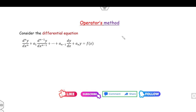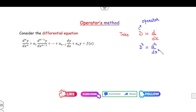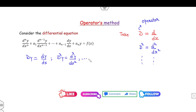Consider the nth order differential equation. We define the operator D as d over dx — make sure this capital D is the operator. Then D squared is d squared over dx squared, and so on. So Dy means dy over dx, D squared y means d squared y over dx squared, and so on.